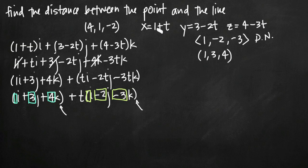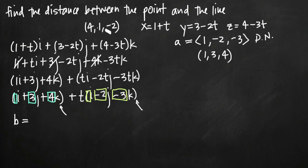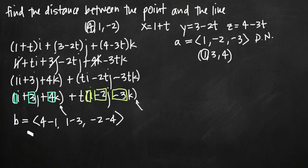Now all we need is a vector that represents the distance between this coordinate point and the point which lies on the line. We're looking for the distance between the given point and the line. We'll call vector a the direction vector. Now we find vector b, which gives a vector between the two coordinate points, by subtracting components: x is 4 minus 1, y is 1 minus 3, and z is negative 2 minus 4. Simplified, vector b is (3, negative 2, negative 6).